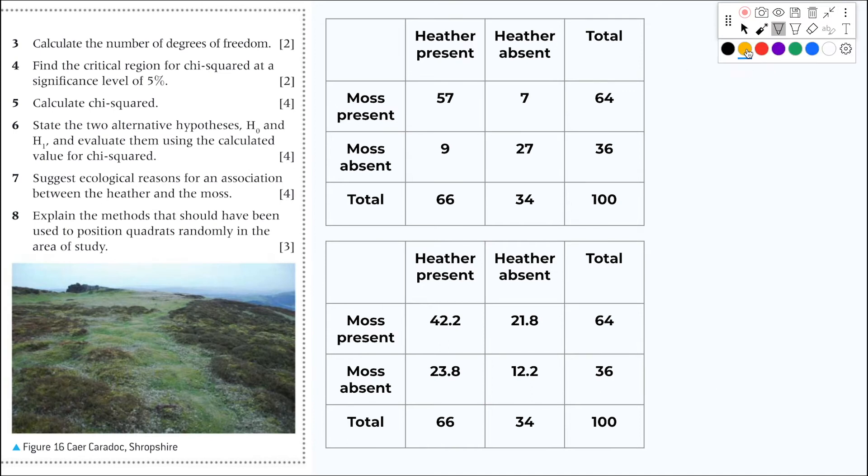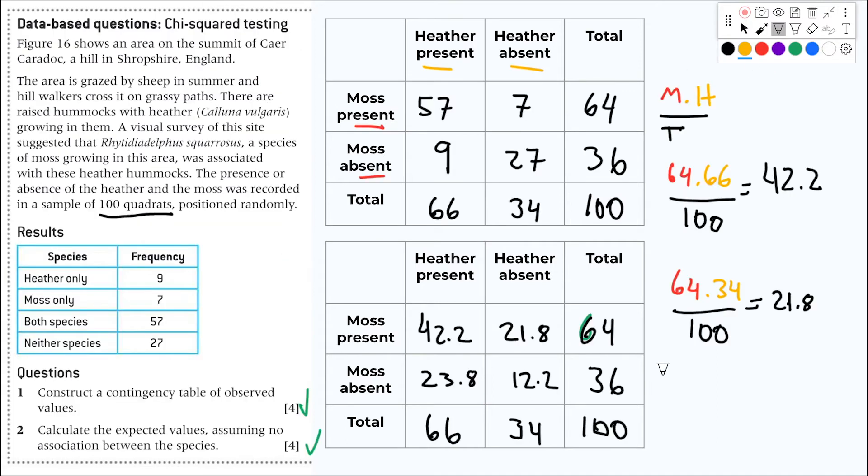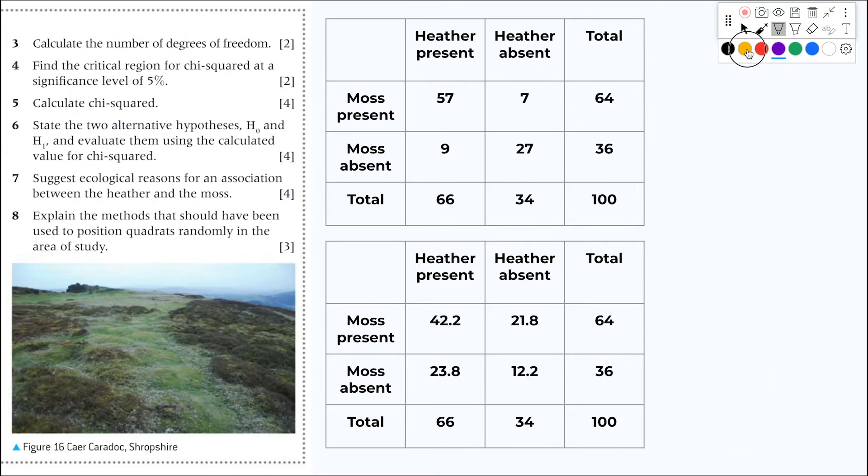The easier way to do this is to say that, well, let's go back here. It's the number of columns minus one times the number of rows minus one. This will give you the degrees of freedom. So here we have columns minus one times rows minus one. What would that be?